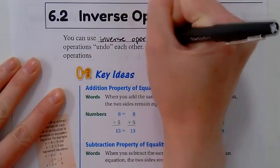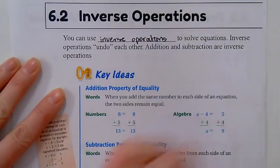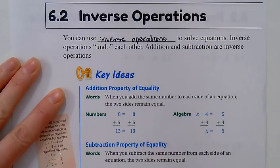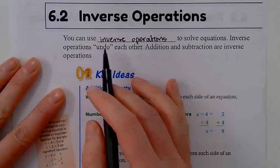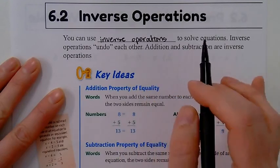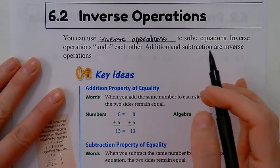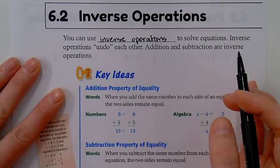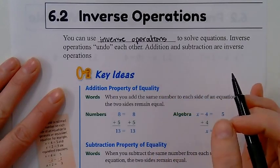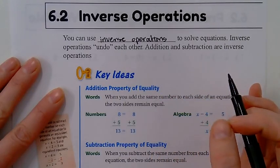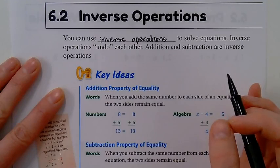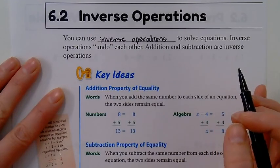We know operations—Mrs. Bryant talks about operations all the time: add, subtract, multiply, or divide. So we can use inverse operations to solve equations. Now equations already have an equal sign; they're equal to something. When I'm talking about solving an equation, I mean an algebraic equation, something with a letter that we haven't figured out yet.